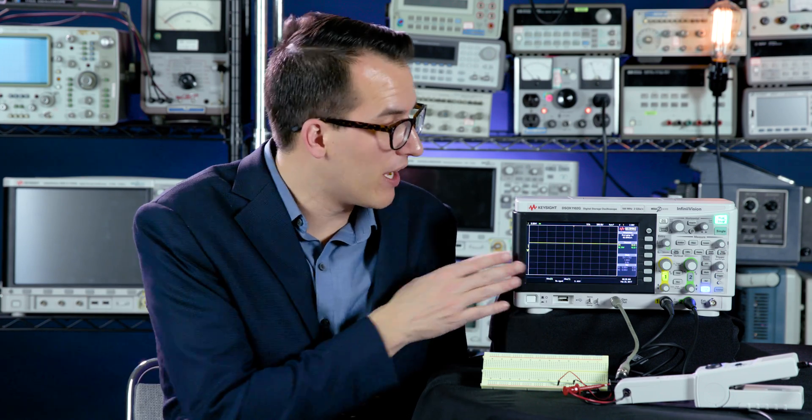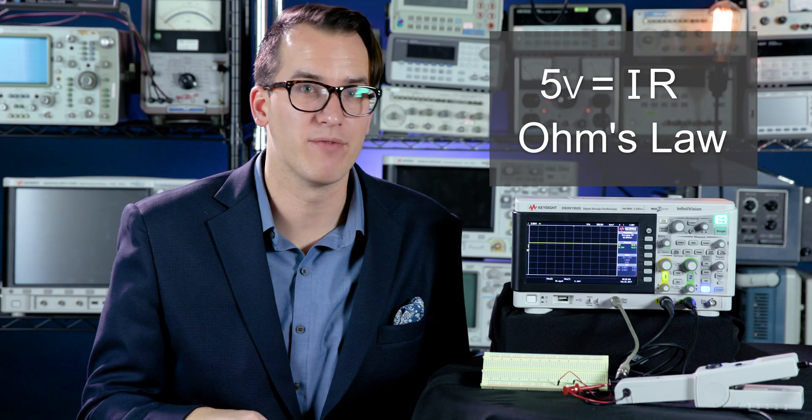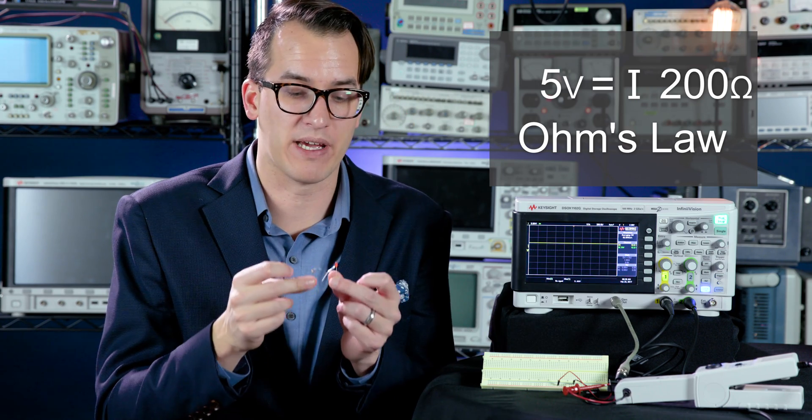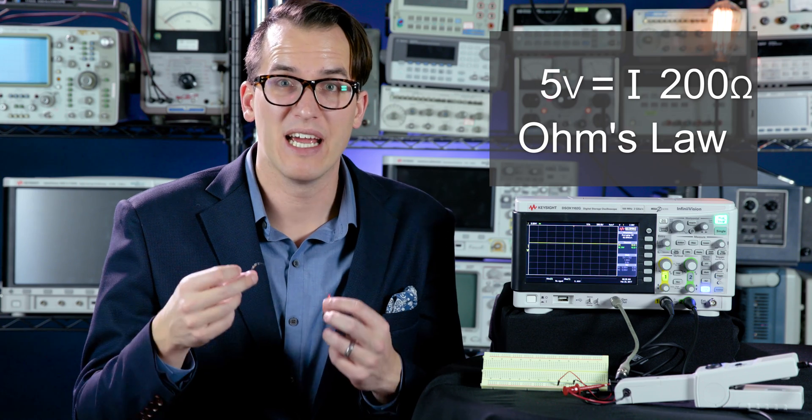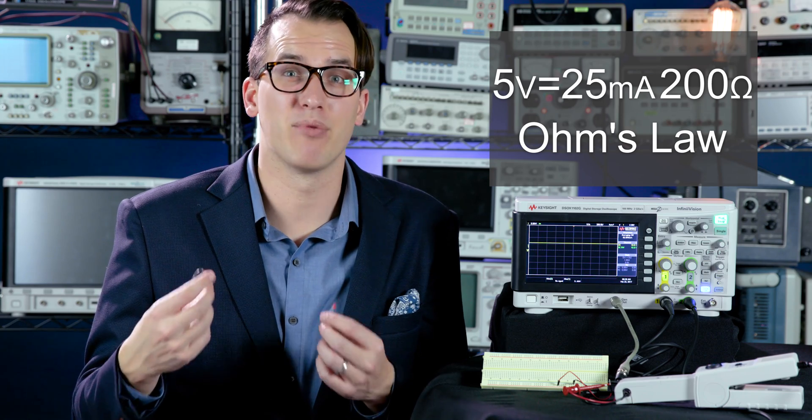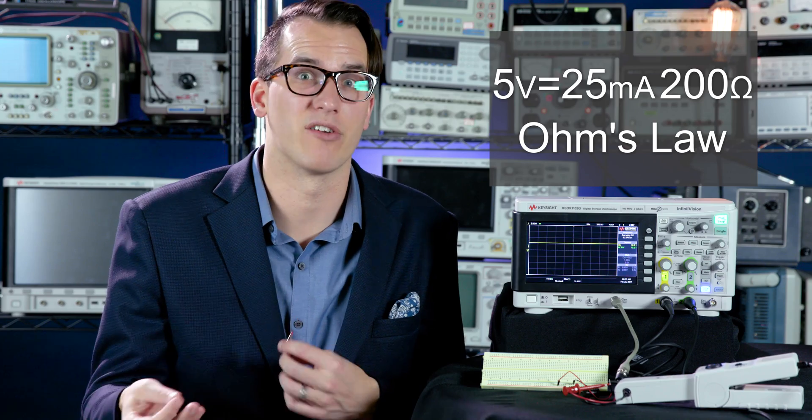So using the function generator, I'm going to apply about five volts DC. Right now I'm applying 5.8 or so. This is going to drop about 0.7 volts and I'm going to use a 200 ohm resistor in series with my LED to limit the current. And this should get me, using Ohm's law, about 25 milliamps of current through the LED, which is enough to make it bright enough to see by the camera, but probably a little more than we would normally want to drive to an LED long term.